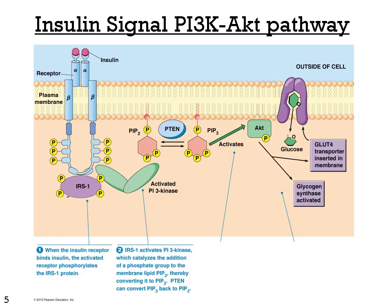IRS-1 then activates PI3 kinase, which catalyzes the addition of a phosphate group to the membrane lipid phosphatidylinositol 4,5-bisphosphate (PIP2), converting it to phosphatidylinositol 3,4,5-trisphosphate (PIP3). PTEN acts as a regulatory step in this process and can interconvert PIP2 and PIP3.